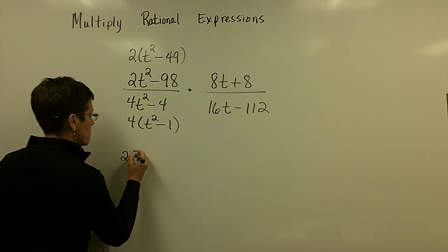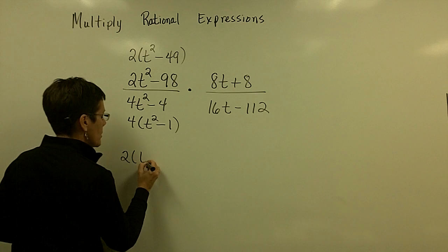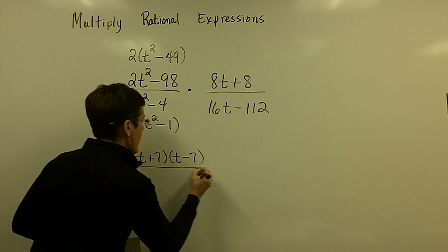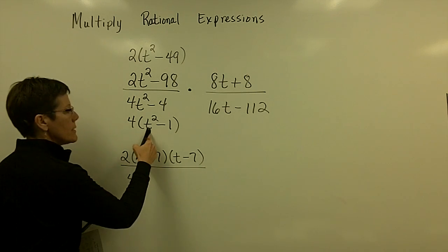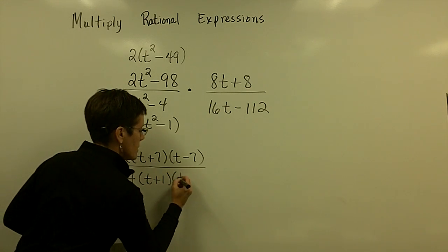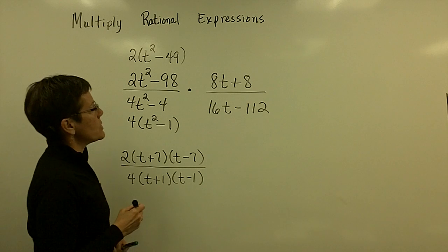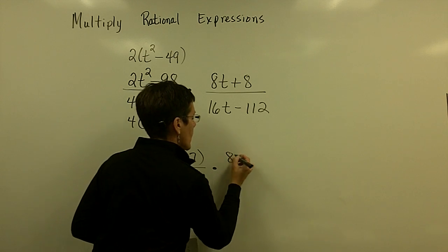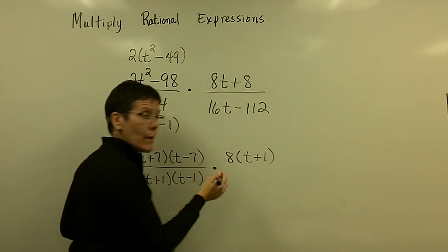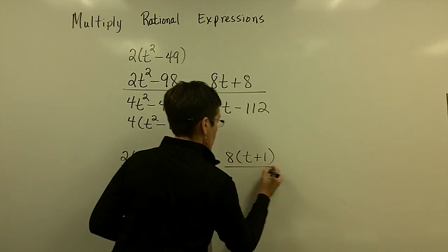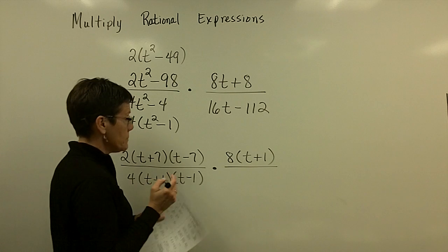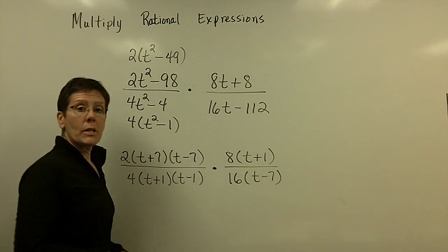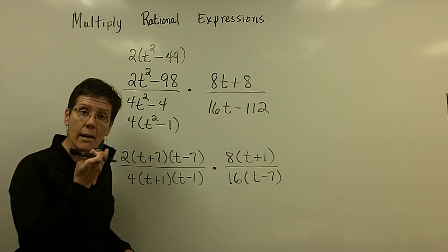Let's get the 4 out of that expression — and that's the difference of squares too. For the first fraction: the common factor of 2, and then t squared minus 49 factors into t plus 7 and t minus 7. Downstairs, the 4 and t squared minus 1 factors into t plus 1 and t minus 1. For the other fraction: the GCF is 8, giving the binomial t plus 1. And 16 goes into 112 seven times, so the common factor there is 16, with binomial t minus 7. Now I've got it all factored.